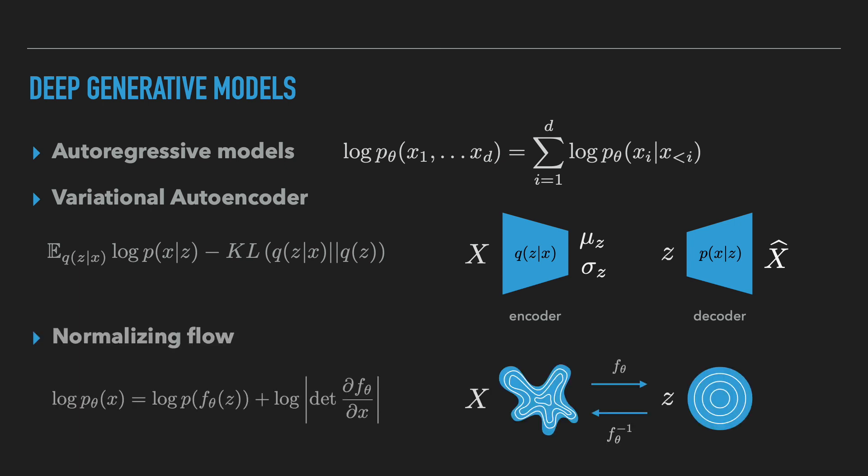Finally, normalizing flows are deep generative models based on invertible neural networks of special architecture. The input data x is modeled as an invertible transformation f of some simple random variable z in the latent space, usually chosen to be a standard Gaussian. We can then compute likelihood p_theta of x exactly using a change of variables formula — it will be the latent likelihood times the determinant of the Jacobian of this transformation.